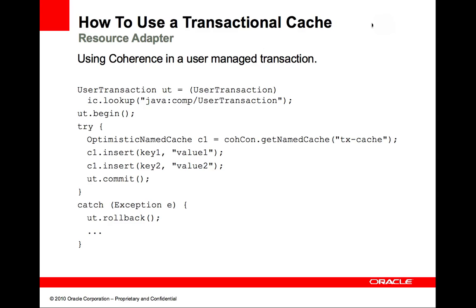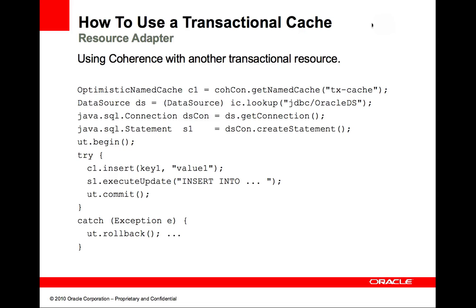In this example, the application controls a distributed transaction through the user transaction instance obtained from the application server via a JNDI lookup. Note that the use of a managed Coherence connection in the context of a distributed transaction will cause the container and resource adapter to enlist the connection with the distributed transaction. Any work done on the Coherence connection in the context of the transaction will either commit or roll back with that transaction. This example demonstrates the use of a Coherence connection along with a JDBC connection in the context of a distributed transaction.